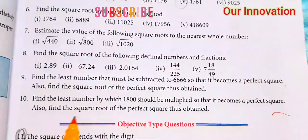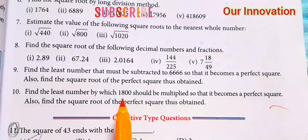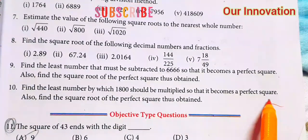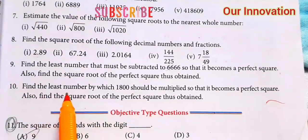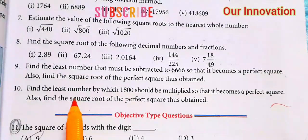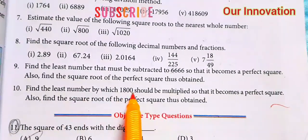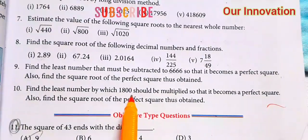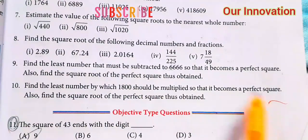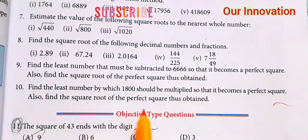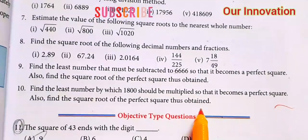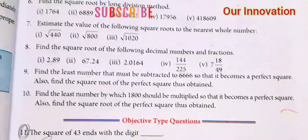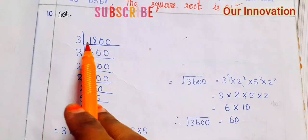Problem 10: Find the least number by which 1800 should be multiplied so that it becomes a perfect square. Also find the square root of the perfect square thus obtained.